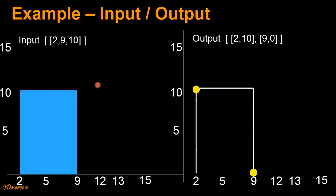In another example, if we have input [2, 9, 10] — that is, a building starting from 2, ending at 9, with height 10 — then the output should be these two key points. The first key point [2, 10] indicates the start of the horizontal line segment, and the second key point [9, 0] indicates the end of the skyline.